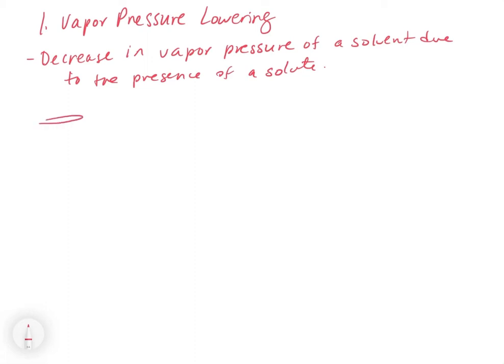If you remember, vapor pressure is — if you have a liquid solution consisting of a solvent plus a solute, the vapor pressure of this mixture is the amount of gas that forms above the liquid. If you put this in a closed container, let's say this is water in a closed container, some of that water is going to evaporate and form a gas above the liquid, and the pressure of that gas is the vapor pressure.